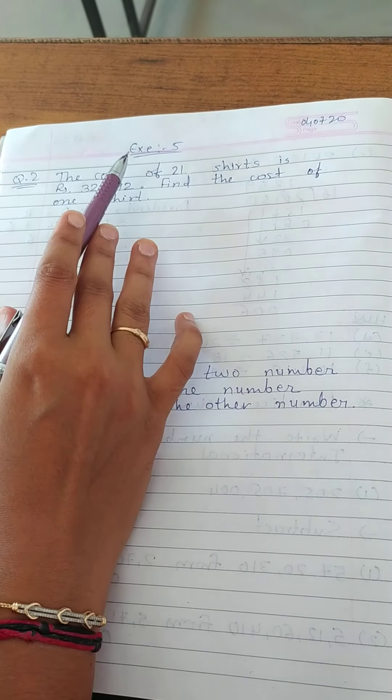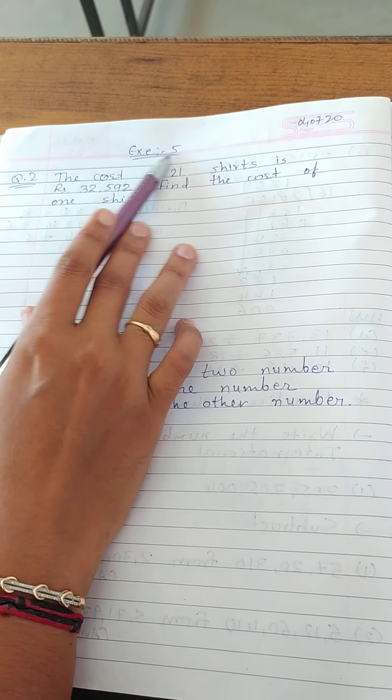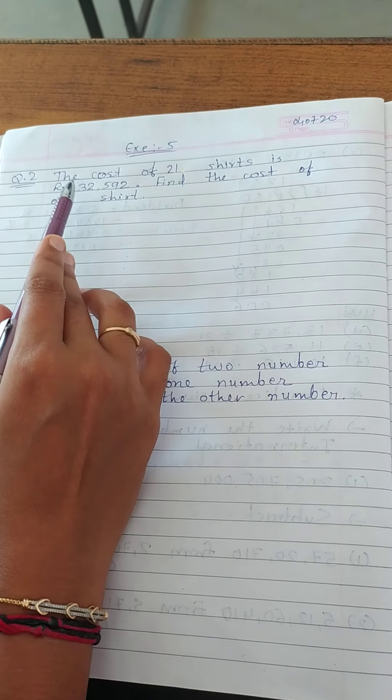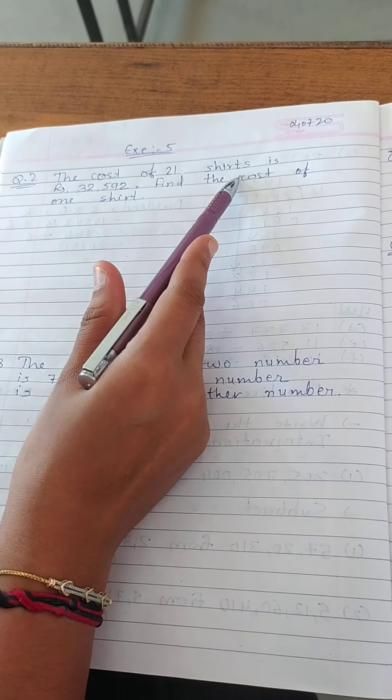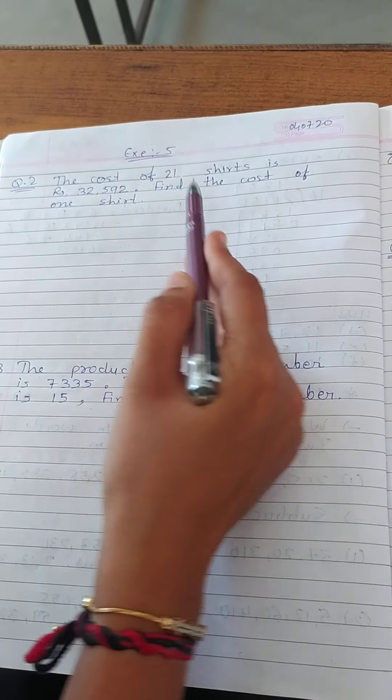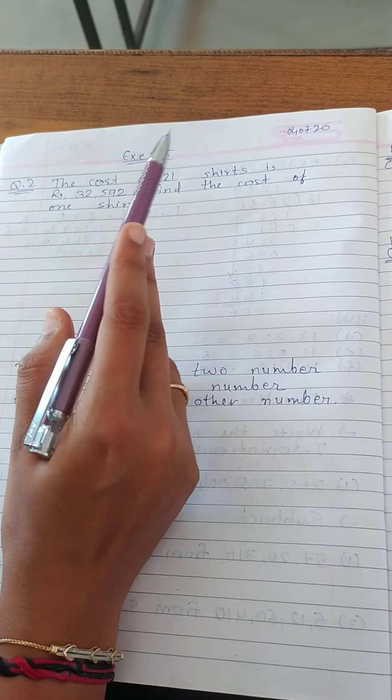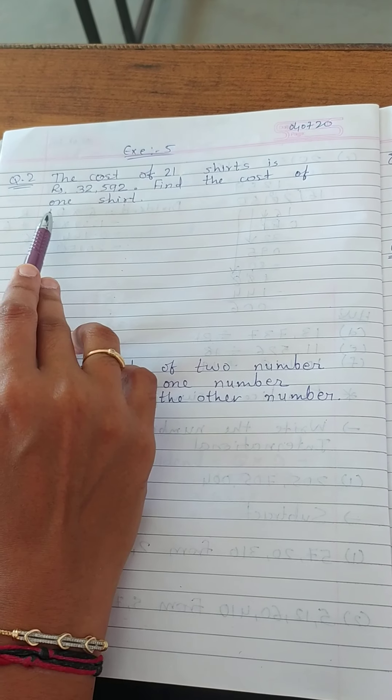Now, chapter number 4, continuing exercise number 5. In that, question 2 is: the cost of 21 shirts is rupees this. Find the cost of 1 shirt. Here we are asked to find the cost of 1 shirt.